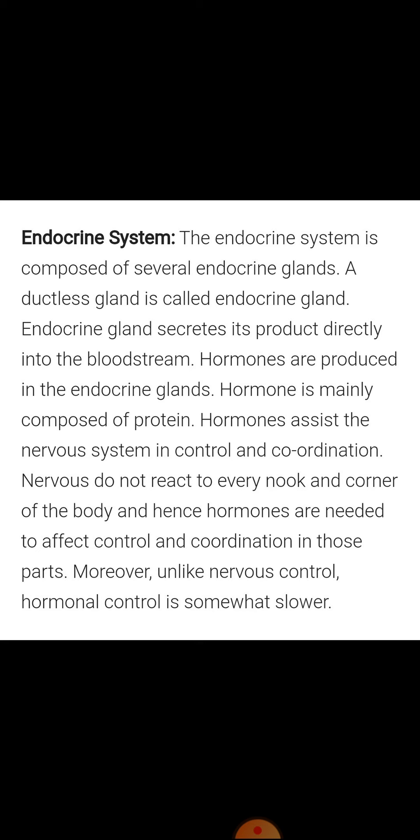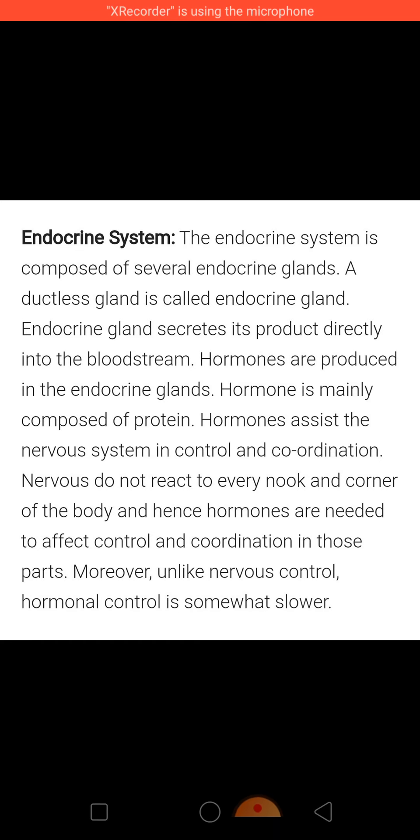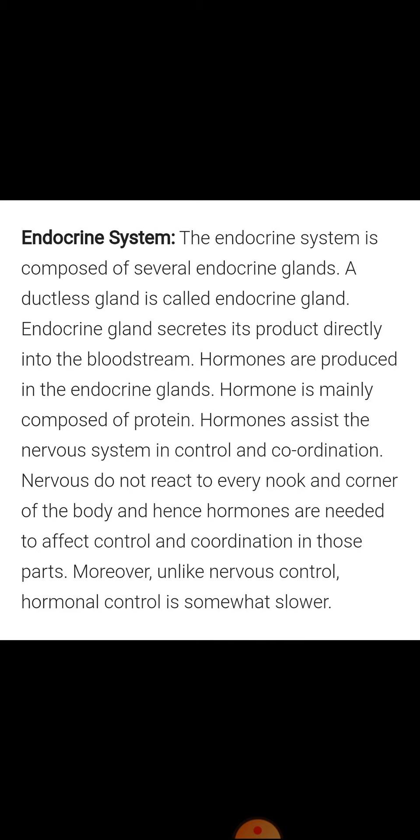Next, talking about the testis — it is an endocrine gland when it secretes the hormone testosterone, and as an exocrine gland it releases sperms, the male sex cells, into the seminiferous duct or tubules. So both functions are performed. The ovary acts as an endocrine gland when it secretes the hormones estrogen and progesterone, and acts as an exocrine gland when it releases an egg or ova into the duct, that is the fallopian tube. So these are examples of mixed glands.